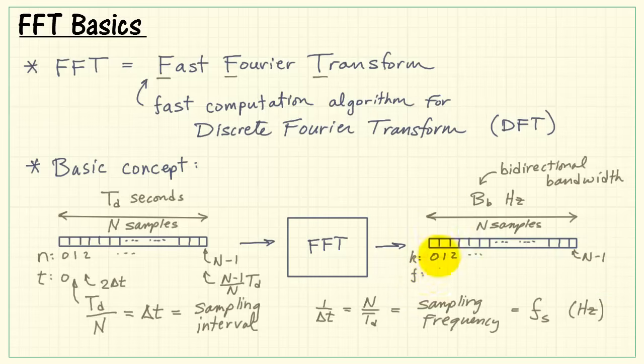The frequency value that corresponds to the index would be 0. 0 frequency, you may recall, is the same thing as dc. This is also the average value of the time domain waveform.